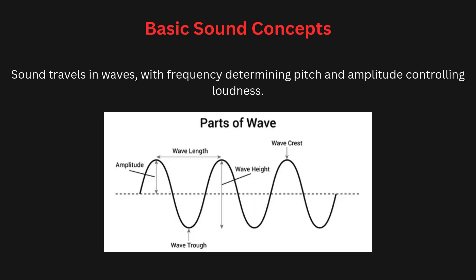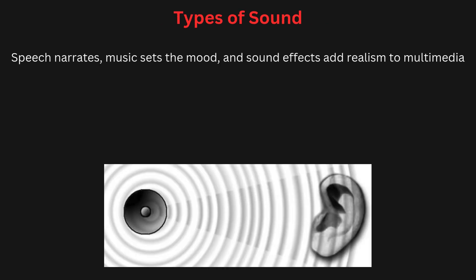So first, the basics of sound concepts. Sound is a form of energy that travels through the air in the form of waves. Sound waves are created by vibrating objects and are characterized by properties like frequency, amplitude, and pitch. Frequency refers to the number of sound wave cycles per second, measured in Hertz, which determines the pitch. Amplitude refers to the height of the sound wave, determining the loudness — a higher amplitude means a louder sound. Understanding these basic sound properties is essential when working with audio in multimedia.